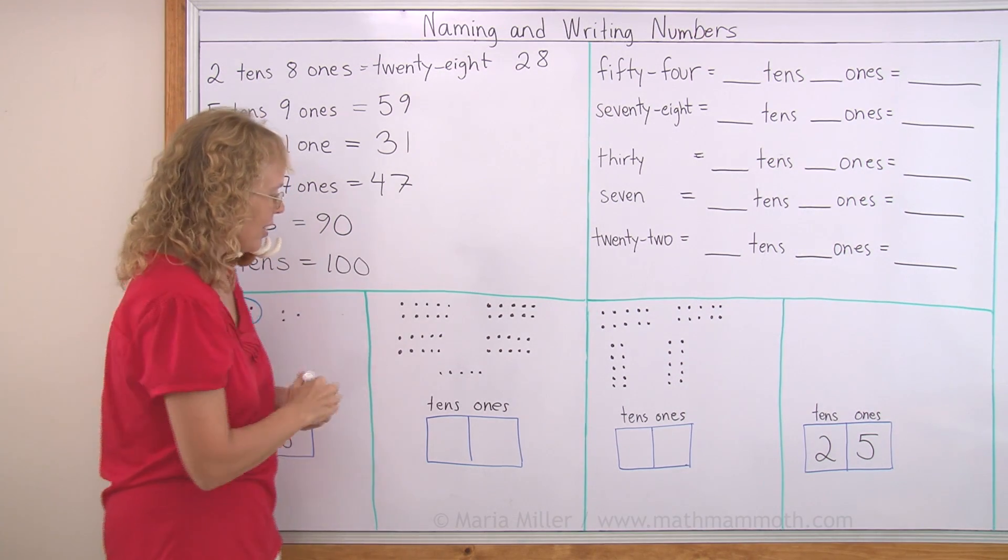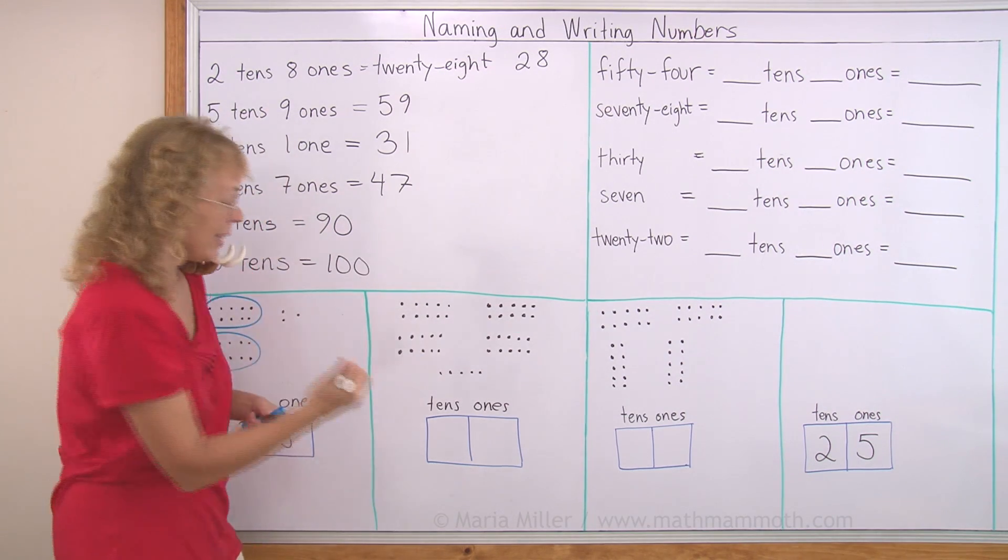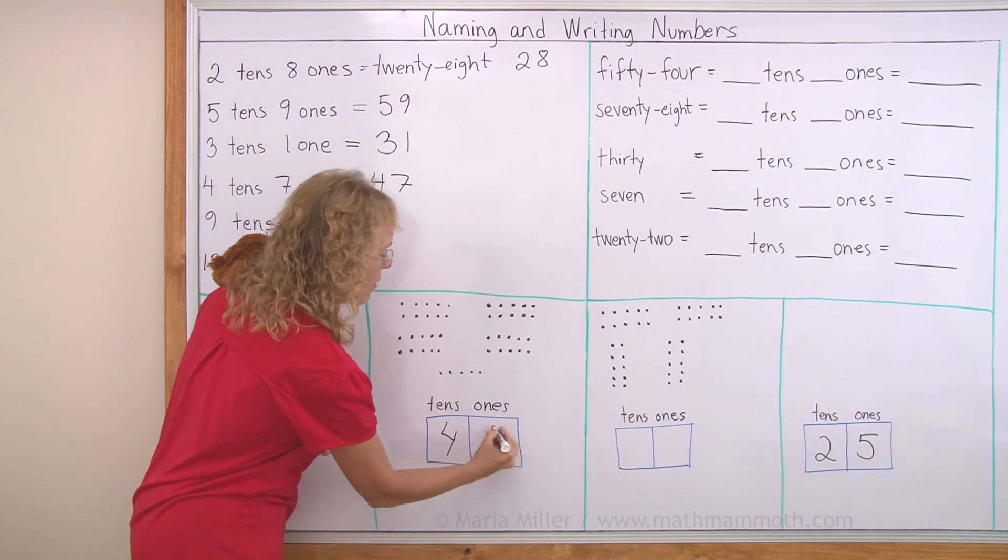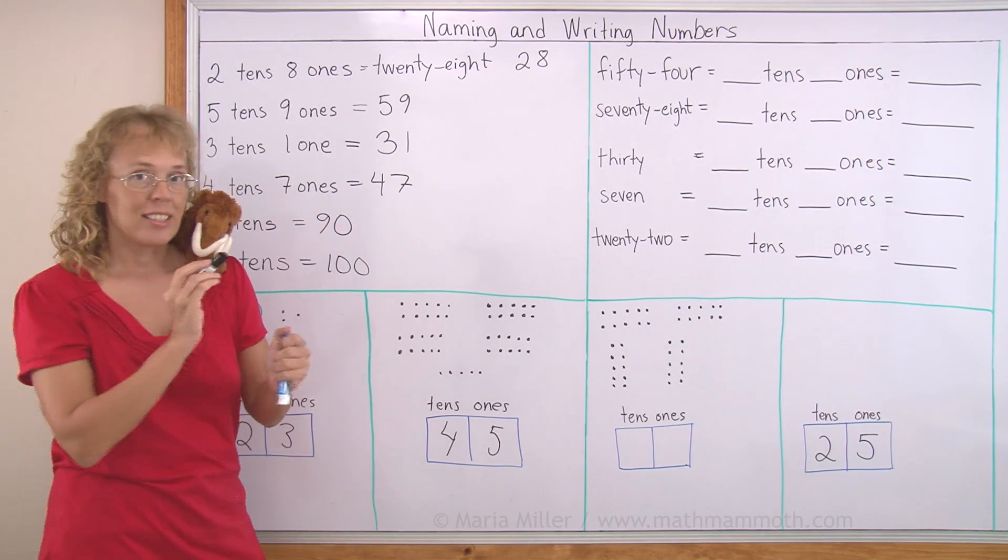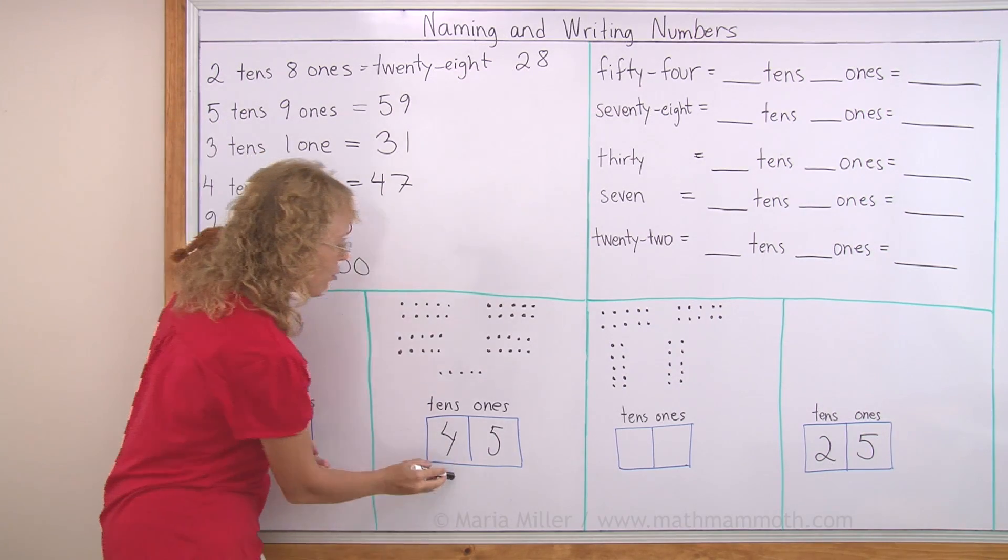Over here, I have 4 groups of tens. And here, 5 ones. What number is it? 4 tens is 40. This is 45.